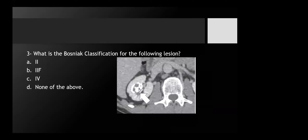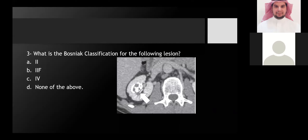Next case. This is a right renal mass with abundant calcification. About 73% of responses were split between option four and 'none of the above.' That's fine — we'll describe it more.